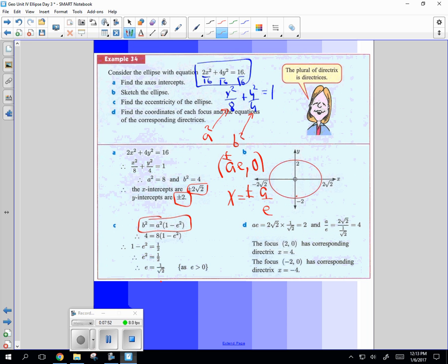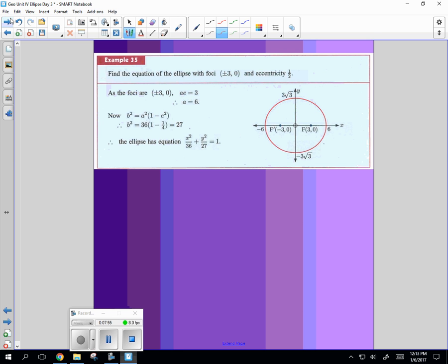And then you can look at this example here, too, where they're given the focus and the eccentricity and go backwards. All you need to do there is the focus and the eccentricity will help you find a, because a times e is equal to 3. And if e is equal to 1 half, you can find out what a is. And a is going to be 6. But once you know that, now you can put it into this equation to find b. And then you can find your final equation.